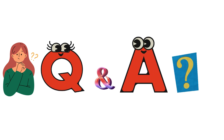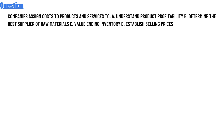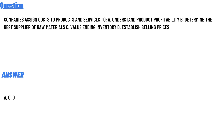Today's question is: companies assign cost to products and services to — option A: understand product profitability; option B: determine the best suppliers of raw material; option C: value ending inventory; option D: establish selling prices. The correct answer is A, C, and D.